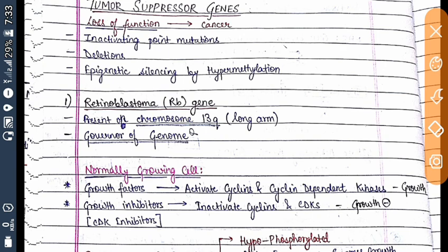This is our third video in this series, where we are going to discuss certain genes again. The first one is the tumor suppressor gene. If there is loss of function in a tumor suppressor gene, that will lead to cancer, as we have discussed. There may be three types of changes which can lead to cancer: inactivating point mutation, deletion, or epigenetic silencing by hypermethylation.